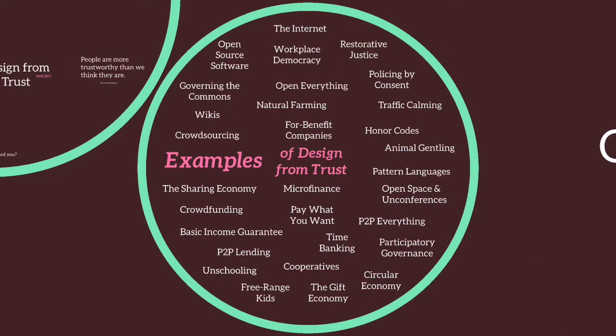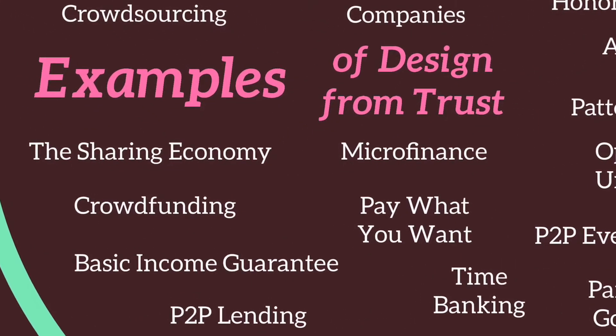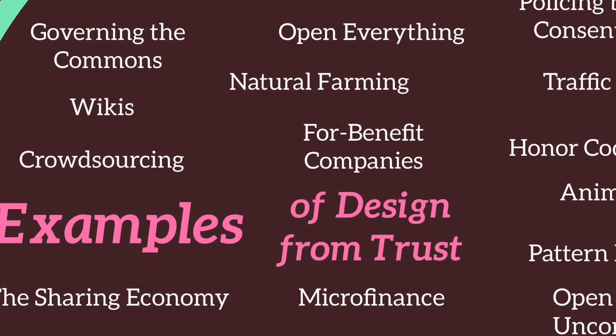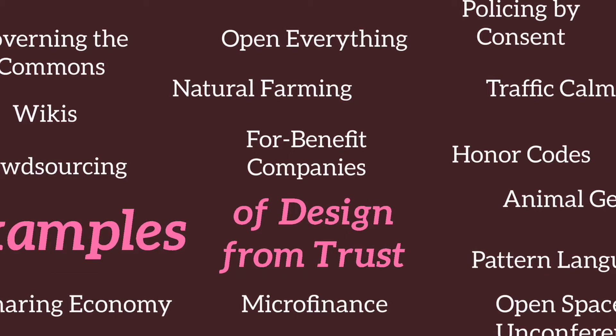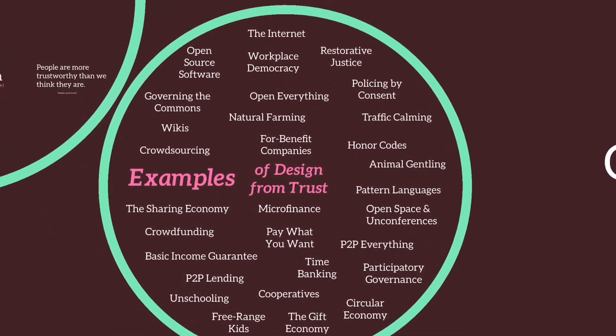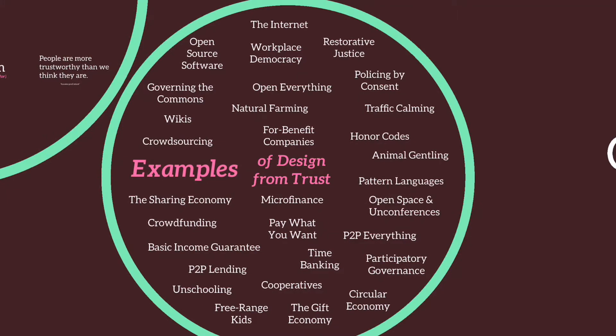Wikipedia isn't perfect — a discussion I'll save for later. But thank goodness there are dozens of other examples of design from trust already in existence around the world. I've listed many of them in this illustration — from the sharing economy, where you climb into a stranger's car or let somebody stay in your home while you're away, to the for-benefit sector where corporations no longer only extract profits, and things like open space and unconferences where you trust that the people you've invited are smart enough to figure out what they ought to be talking about, rather than engineering everything for them.